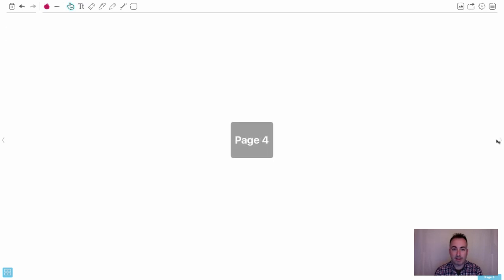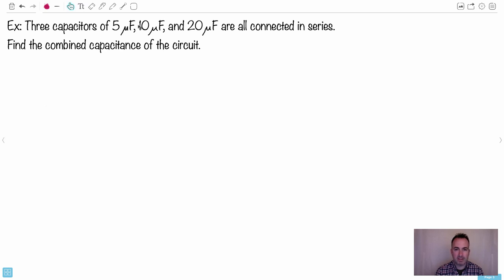Now comes maybe a too simplistic example, but it's just to get you practice. We have three capacitors: five microfarads, 10 microfarads, and 20 microfarads, and they're all connected in series. What's the combined capacitance? You put them all in series - not resistors, sorry, capacitors. This one here is five microfarads, this one's 10, and this one's 20.